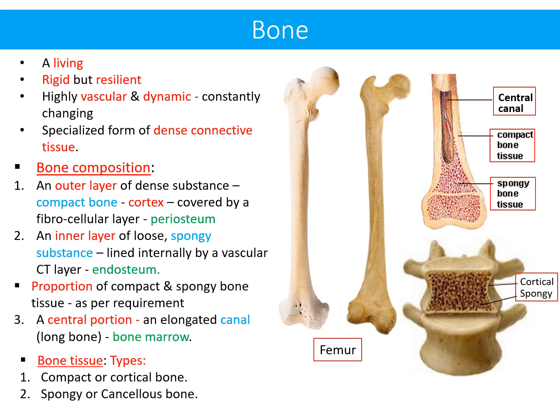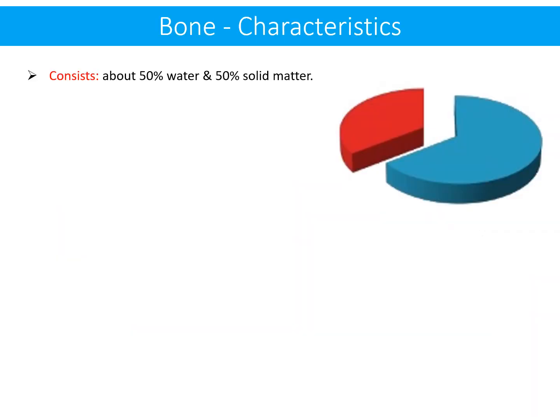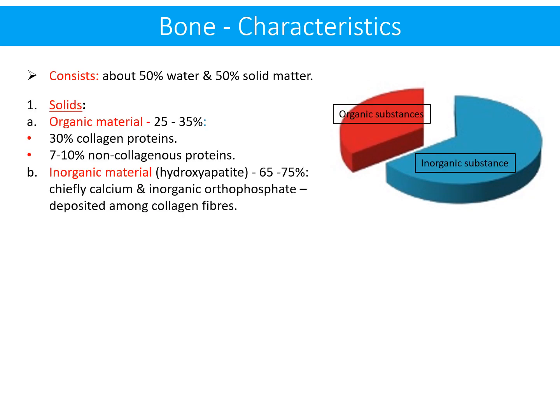There are two types of bone tissue: compact or cortical bone, and spongy or cancellous bone. Bone consists of about 50% water and 50% solid matter. Among the solids, 25 to 30% are organic material made up of collagen proteins, and 7 to 10% are non-collagenous proteins.